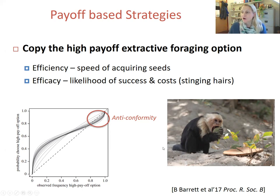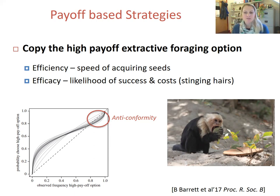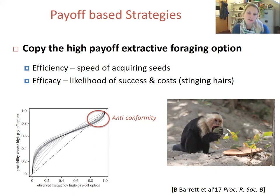However, you can also see that at higher rates of observing this high payoff behaviour, individuals showed a weak anti-conformity bias. In other words, when they had a very high rate of observation of the high payoff option, they became less likely to use that behaviour and demonstrated a preference for the rarer low payoff option instead.